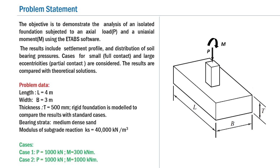The parameters for the problem are: length L of the footing is 4 meters, width B is 3 meters, and thickness t is 500 mm. The material properties are set such that a rigid foundation is modeled, enabling comparison with standard cases. The bearing strata is modeled as medium dense sand with a modulus of subgrade reaction Ks of 40,000 kN per meter cube.